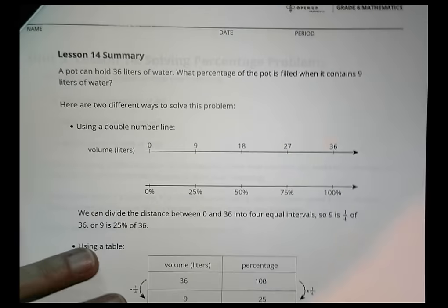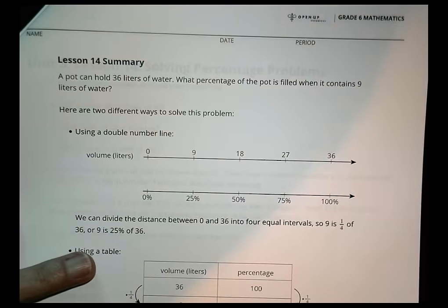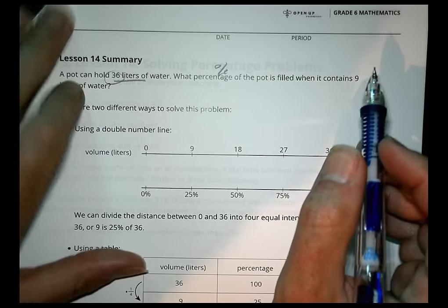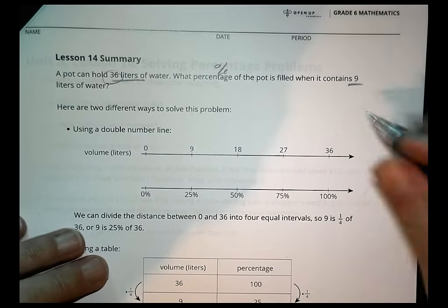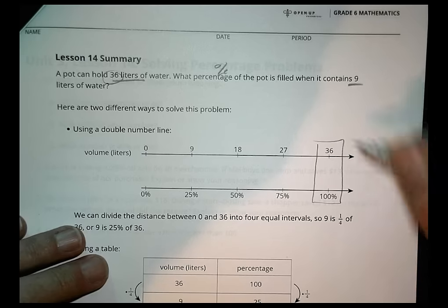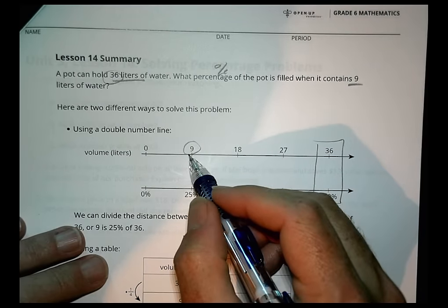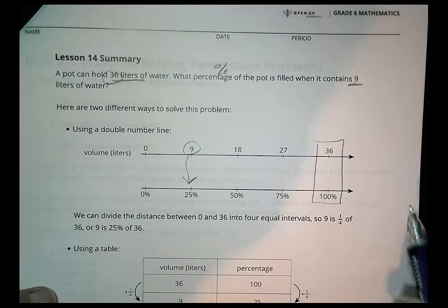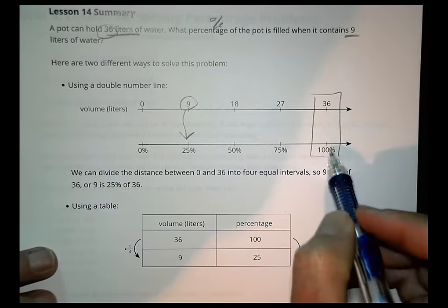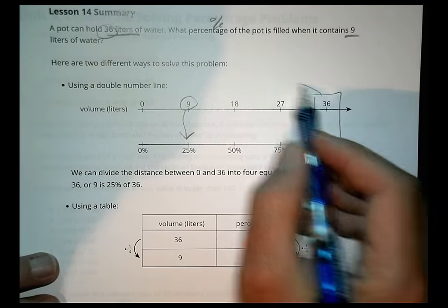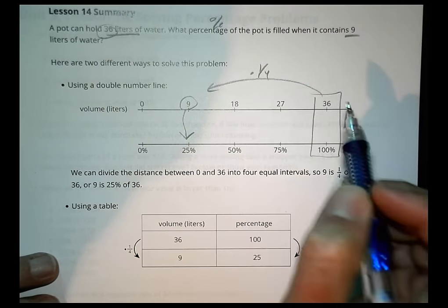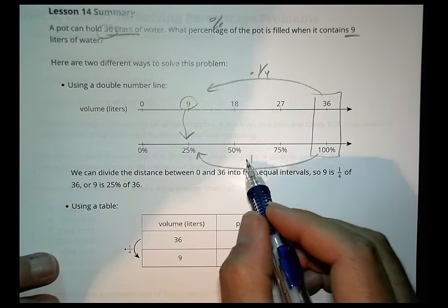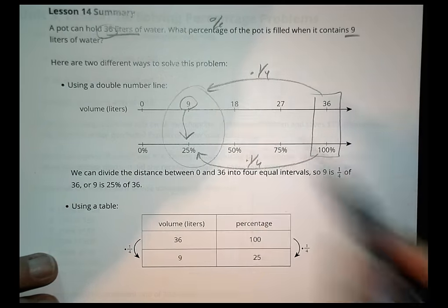In summary for today's lesson, we have a little example here that says a pot can hold 36 liters of water. What percentage of the pot is filled when it contains 9 liters of water? We know that 36 is the whole pot being filled with water. The question is, well, what if you just have 9? What percentage is that going to be? We can solve it a couple ways. We can solve it using a double number line.